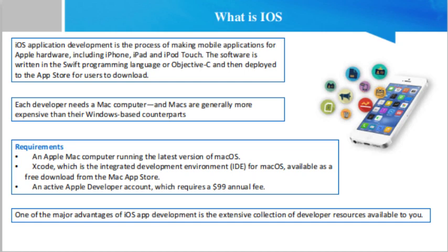There are currently two programming languages for iOS app development. Objective-C, developed in the early 1980s, was the primary programming language for all Apple products for decades. Derived from the C language, Objective-C is an object-oriented programming language centered on passing messages to different processes. Many developers choose to maintain their legacy applications written in Objective-C instead of integrating them into the Swift framework, which was introduced in 2014.